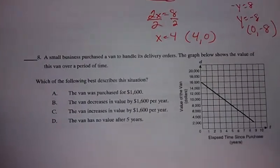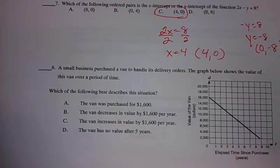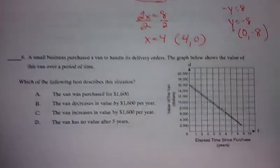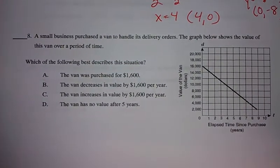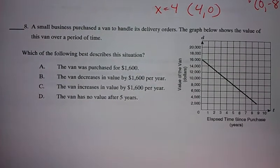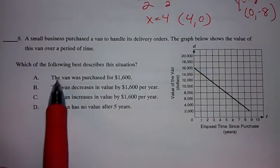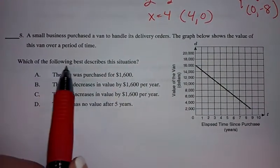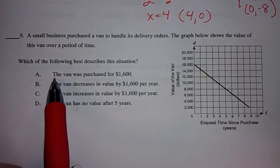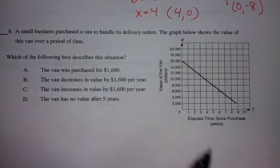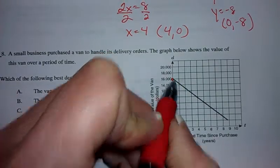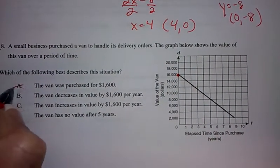The next one, it says a small business purchased a van to handle delivery orders. The graph below shows the value of the van over a period of time. Okay. It says the van was purchased. It says, Which of the following best describes the situation? The van was purchased for $1,600. Oh no, no. It starts here at $16,000. That's not it.